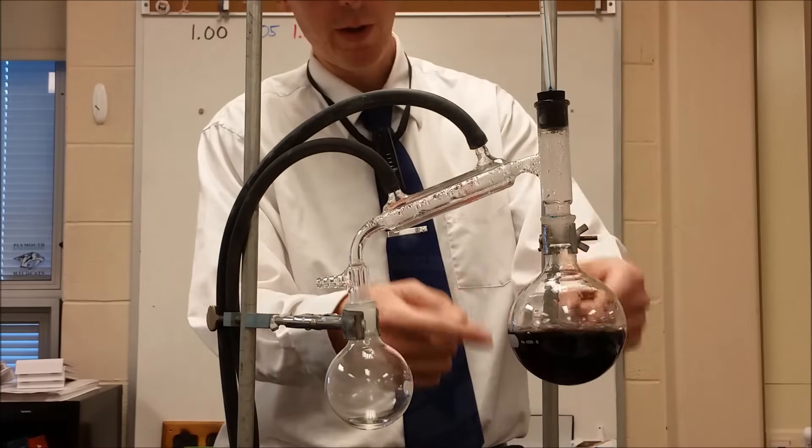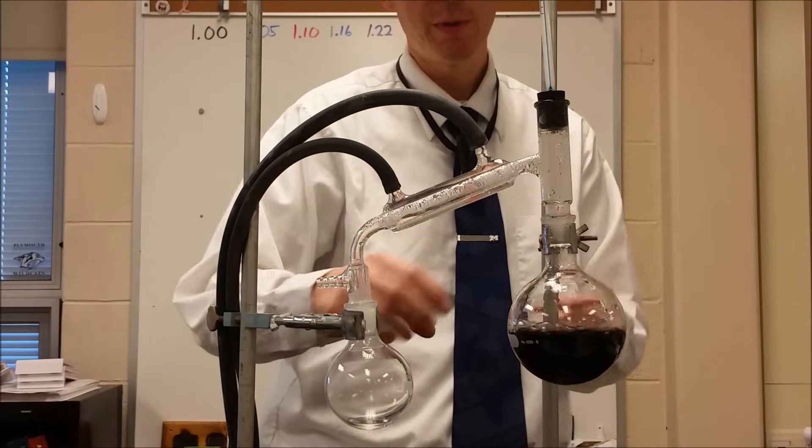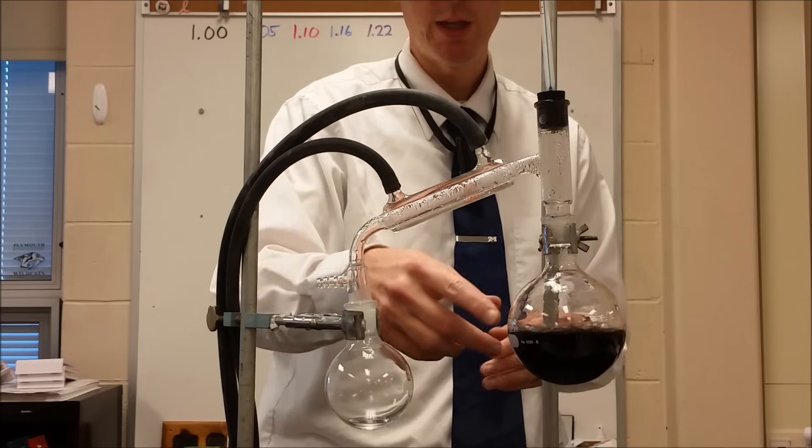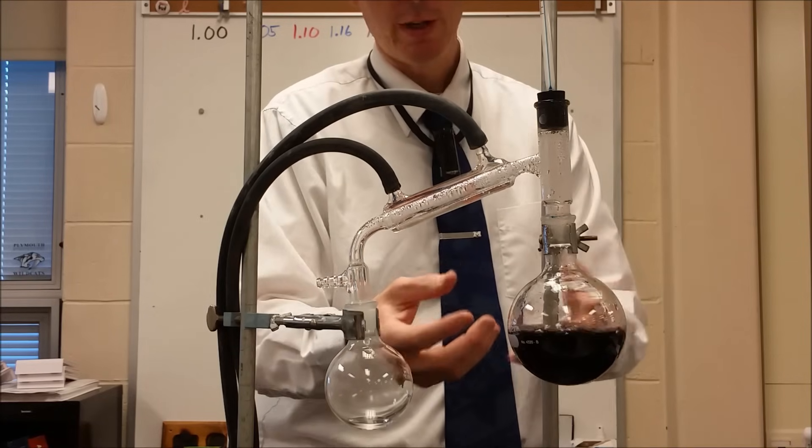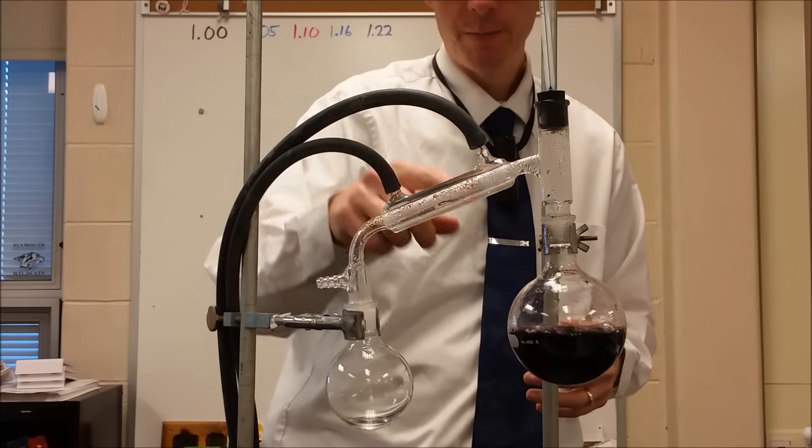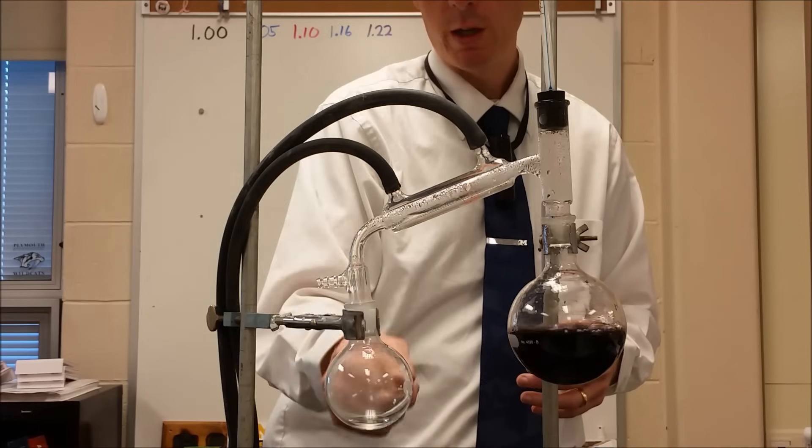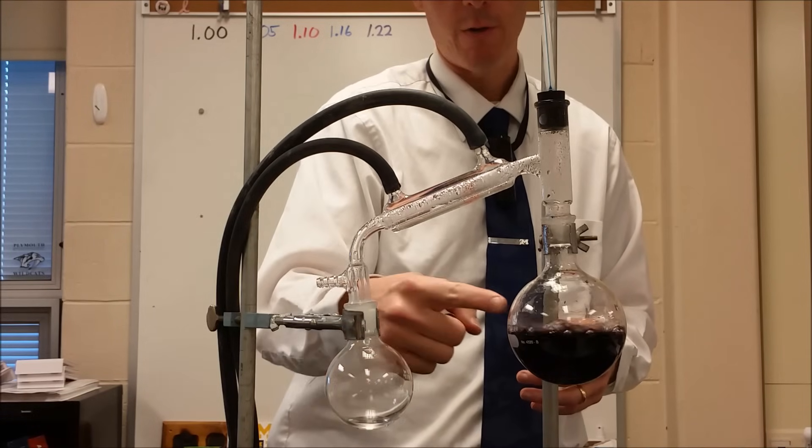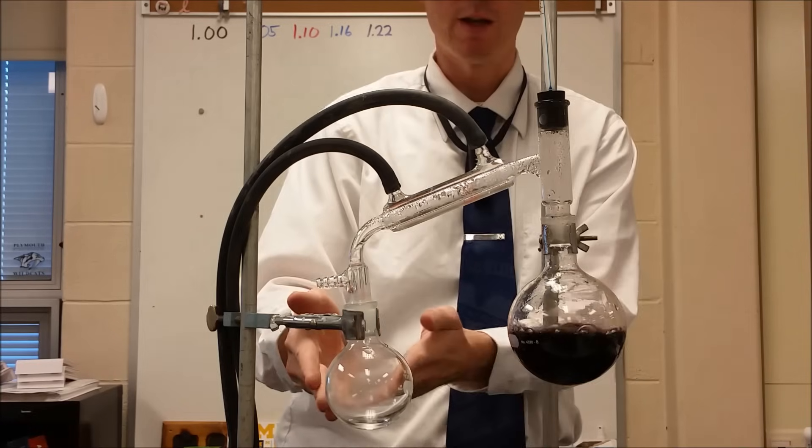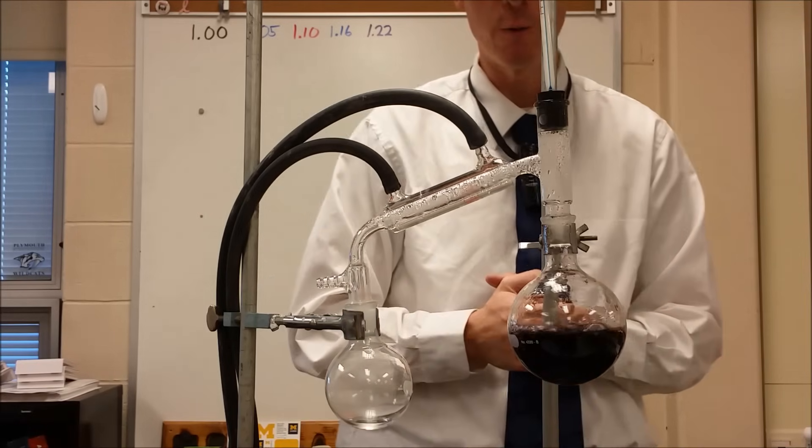So the separation is now going and we have the water coming off of this because water is at a lower boiling point than whatever the substance is that's used for the food coloring here. So we see the water coming over here in a much purer state than we have over here, and we can tell because this is colorless and this still has obviously the food coloring in it.